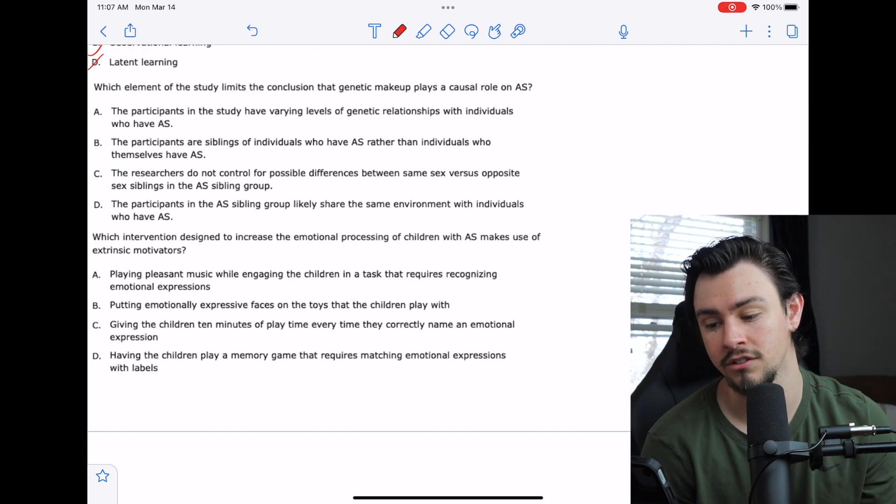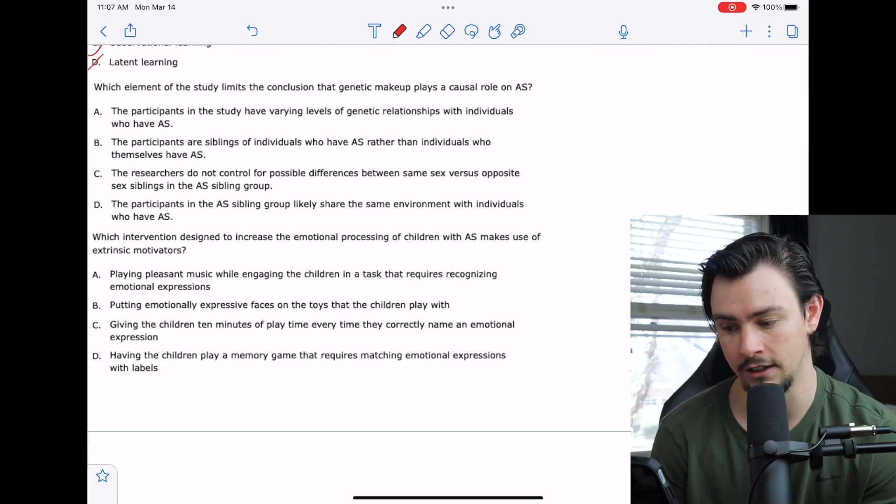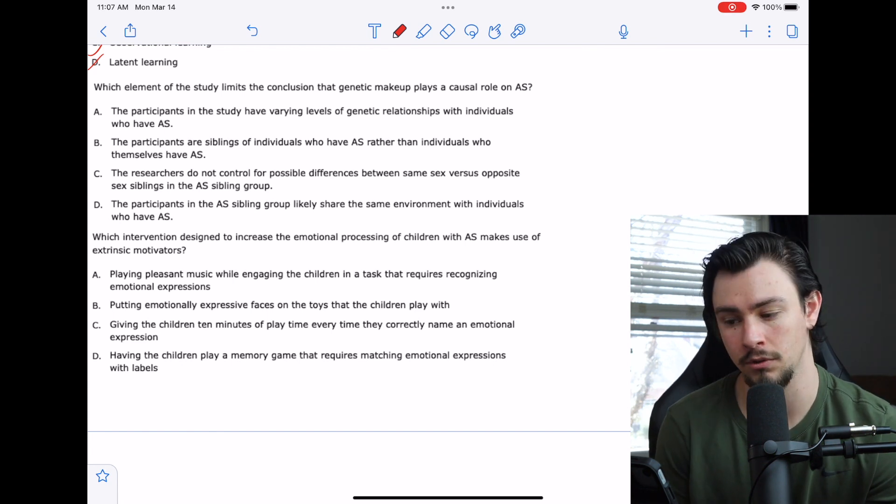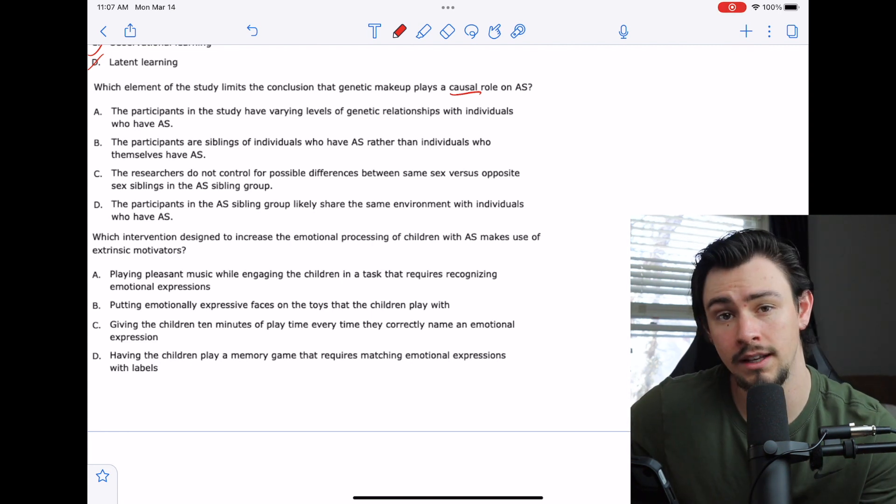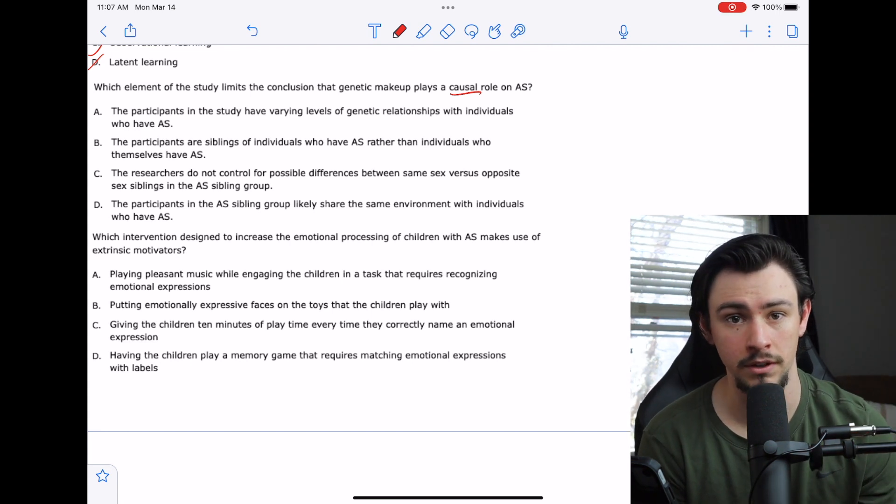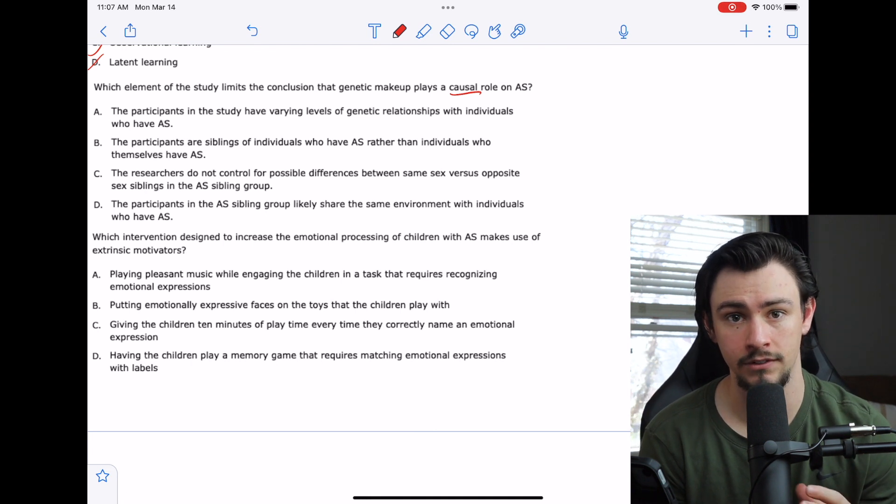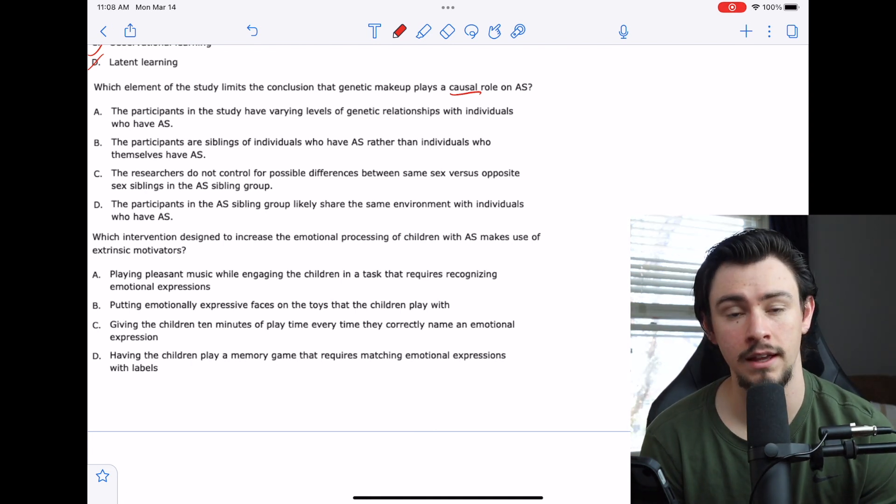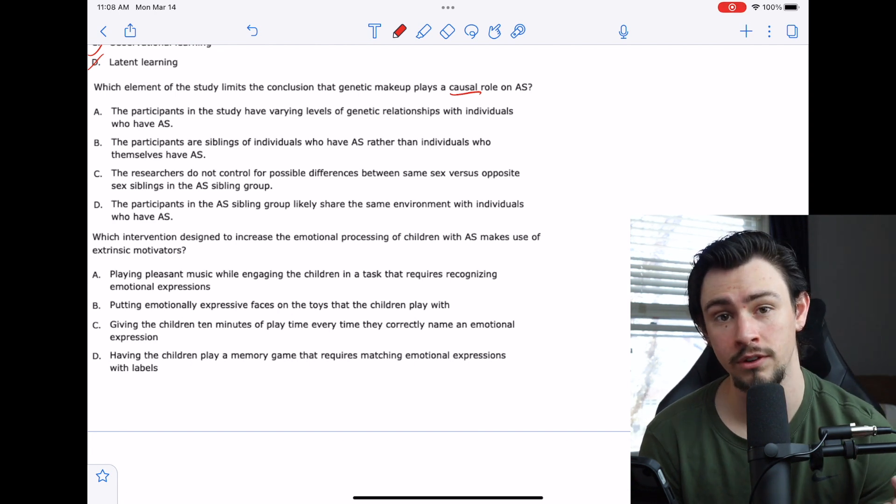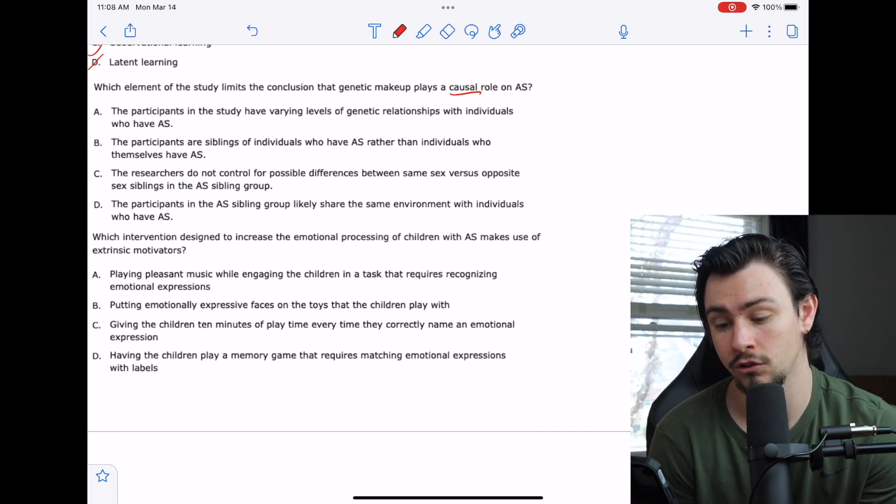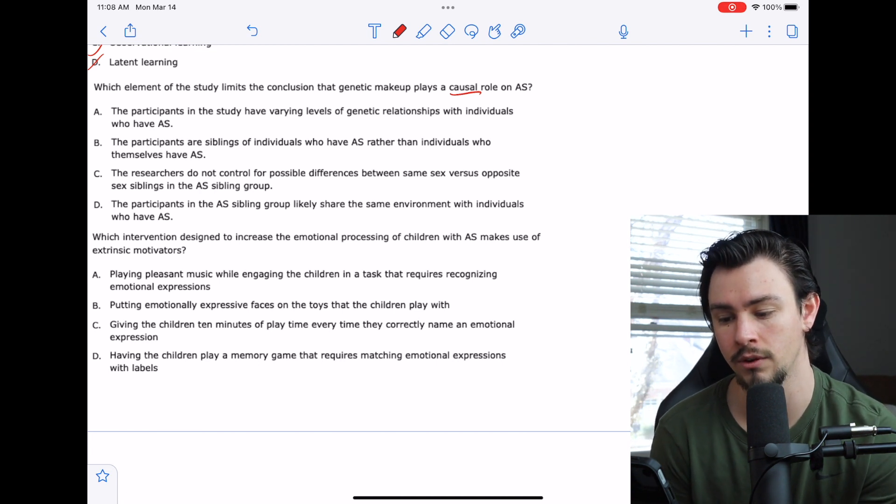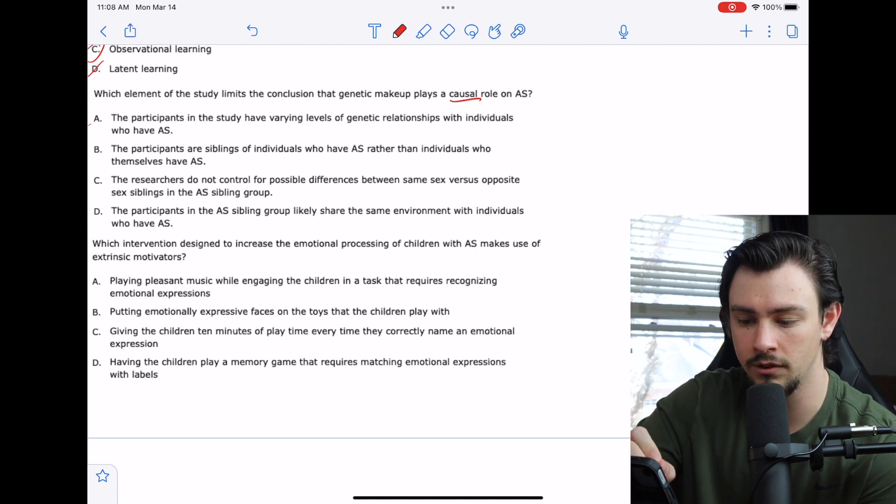Number 19 says, which element of the study limits the conclusion that genetic makeup plays a causal role in Asperger's syndrome? Causal is a strong word. So I'm looking for anything that can punch a hole in this theory that Asperger's syndrome is completely due to genetics. Usually what that looks like functionally is I'm looking for an additional variable that the researchers did not control for.